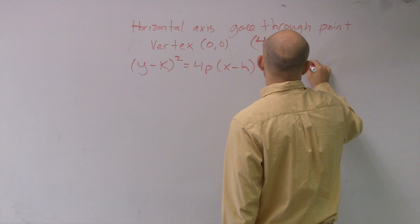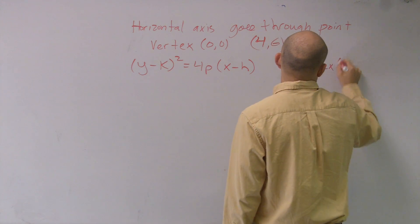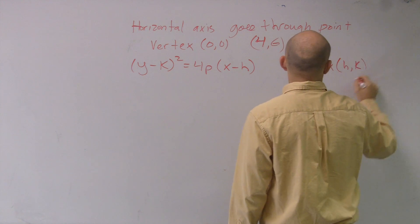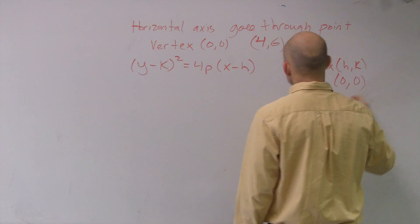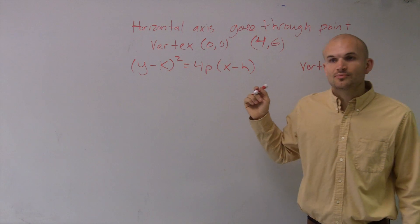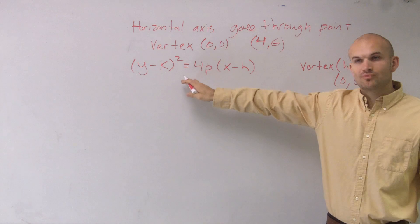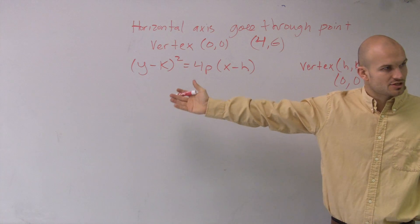Remember a couple things. The vertex is (h,k), which in this problem was (0,0). So what I'm going to simply do, Courtney, is I'm going to plug in 0 and 0 for h and k. Does that make sense?